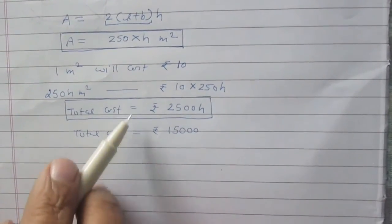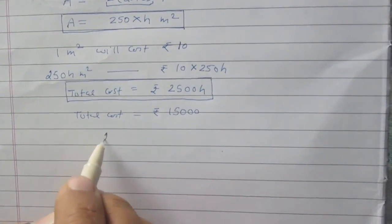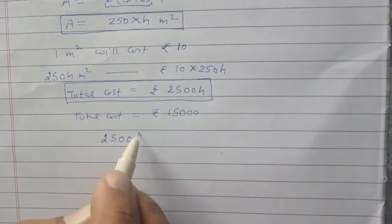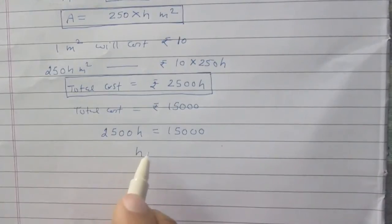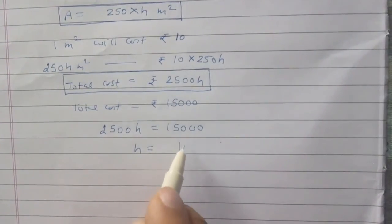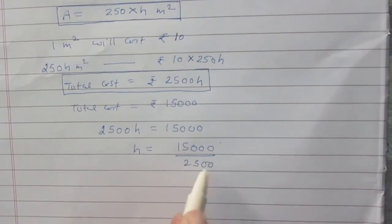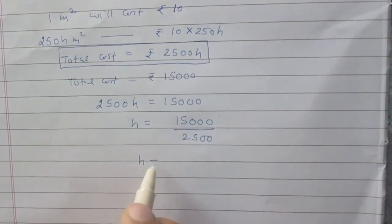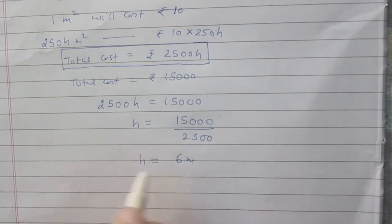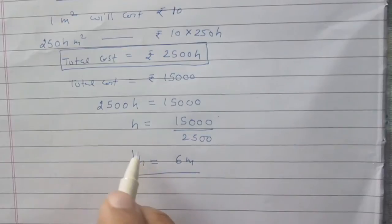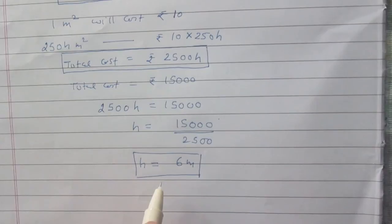Combining these two facts, we get the linear equation: 2500H = 15,000. So H = 15,000 ÷ 2500. Therefore, the height H = 6 meters. So the height of this rectangular hall is 6 meters.